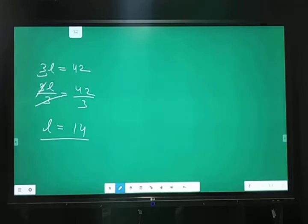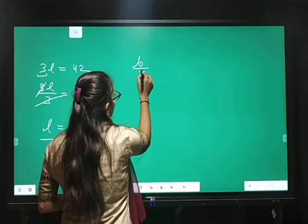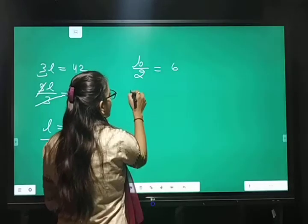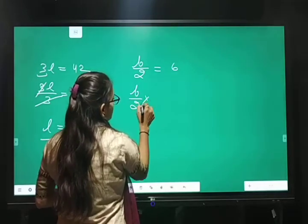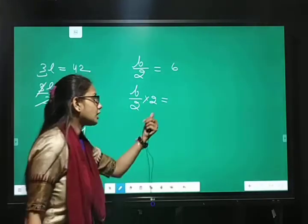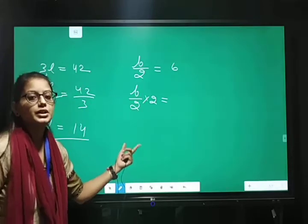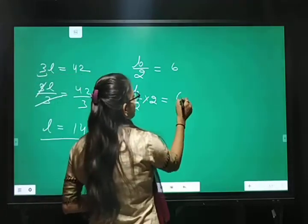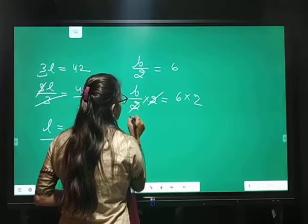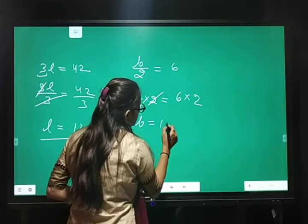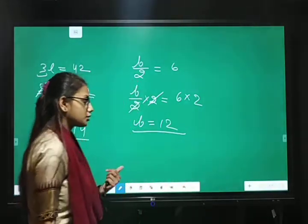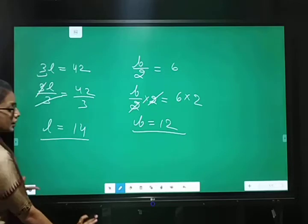Aur agar aapke paas divide me ho. B upon 2 equal 6. B upon 2 equal 6. Toh aap kya karloge? Multiply karoge constant term ka. Digit change nahi karoge. Jo variables ke saath constant term hai. Usi ko loge. Toh 6 multiply by 2. 2 say 2 cancel out ho gaya. Toh value of B equal 6 multiply by 2. Toh 6 to the 12. Clear students?